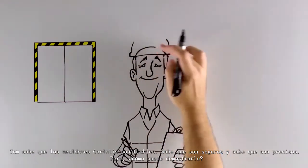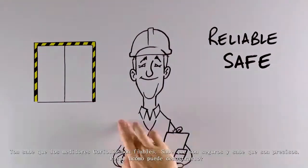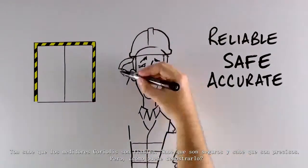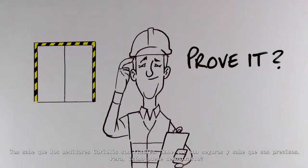Tom knows that his Coriolis meters are reliable. He knows that they're safe and he knows they're accurate. But how does he prove it?